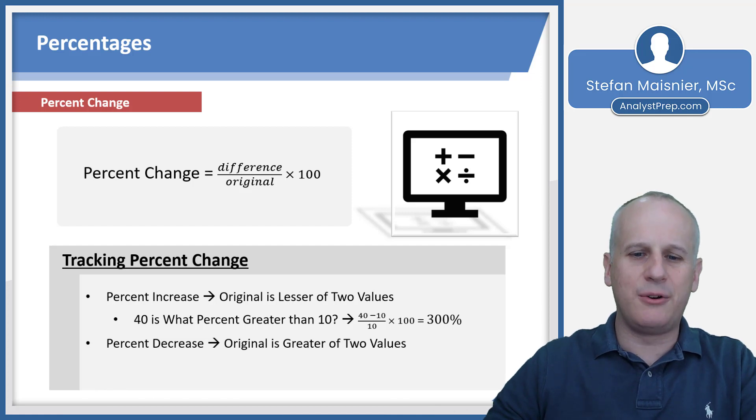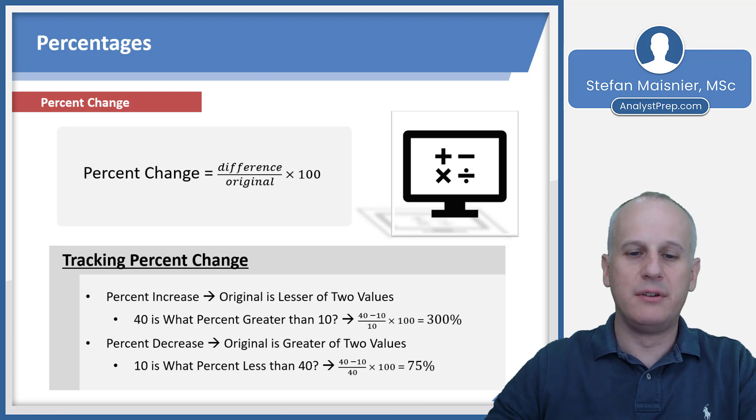Percent decreases though, the original is going to be the greater of the two values because you can't go down if you didn't start from the higher point. So 10 is what percent less than 40? Well that's going to be 40 minus 10, same 30, divided by 40 as the new original when we're doing a percent decrease in this problem, times 100. So 30 divided by 40 reduces down to three-fourths, and we know that becomes 75%.